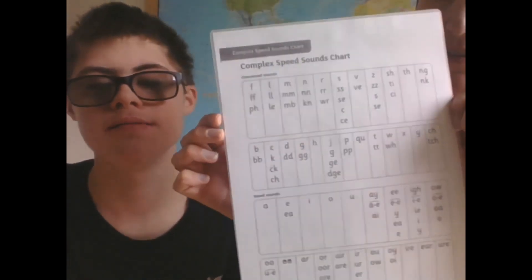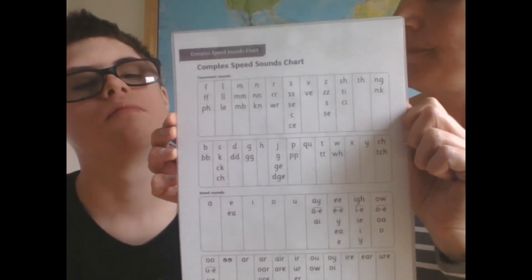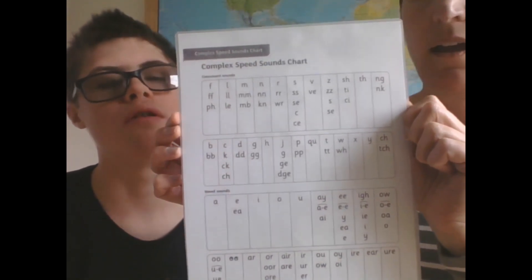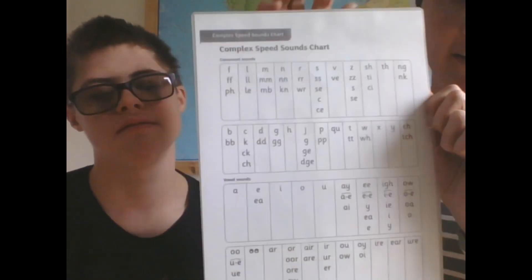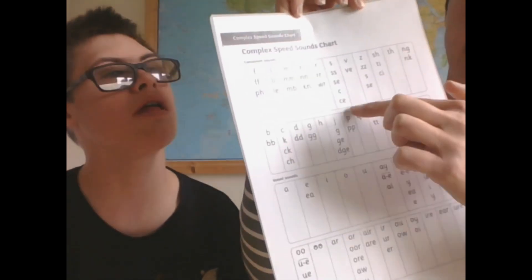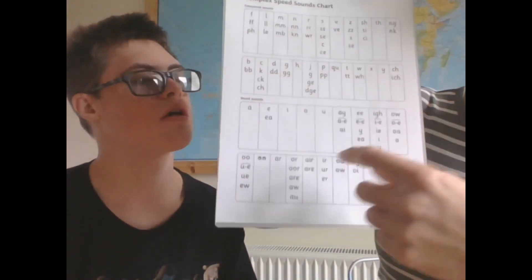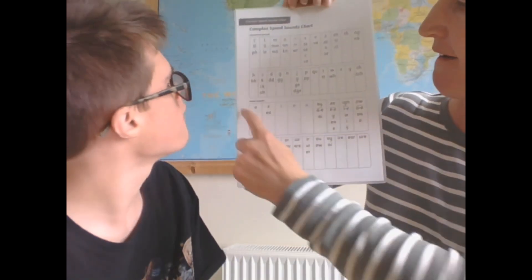Now there are other ways of spelling those sounds, but these are the most common. At the top of the sheet are your consonant sounds, and at the bottom of the sheet are your vowel sounds. Brilliant.